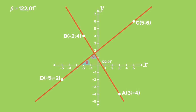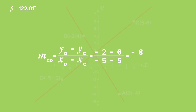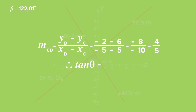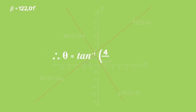Next, we need to calculate theta, the inclination of line CD. The gradient of line CD, m_CD, equals y_D minus y_C, all divided by x_D minus x_C. This equals negative 2 minus 6, all divided by negative 5 minus 5. We get negative 8 divided by negative 10, which equals 4 divided by 5. Therefore, tan theta equals the gradient of line CD, m_CD, which equals 4 divided by 5.